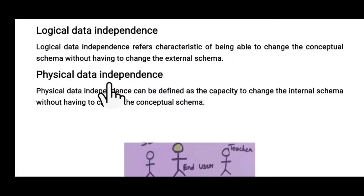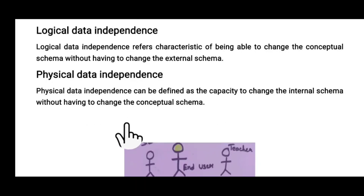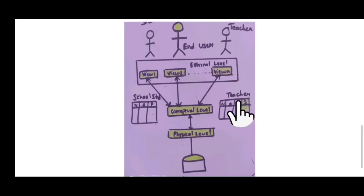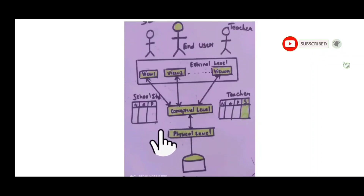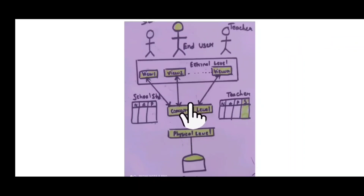Physical data independence can be defined as the capacity to change the internal schema without having to change the conceptual schema. Physical data independence deals with the difference between the physical and conceptual level. If you make changes in the physical level, you don't need to do any alteration in the conceptual level.